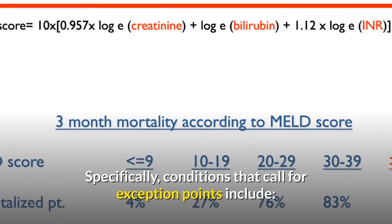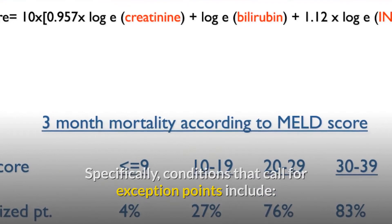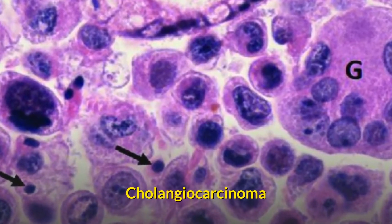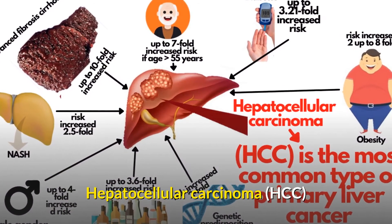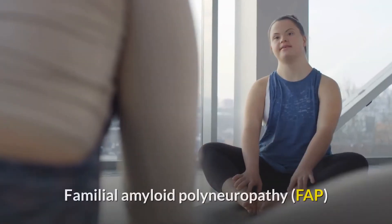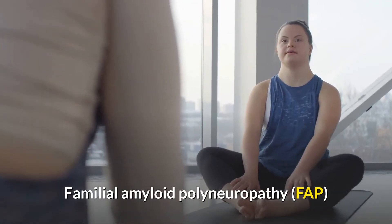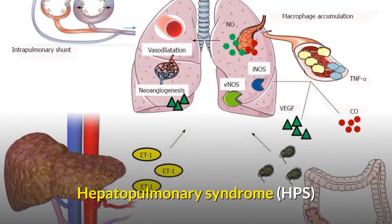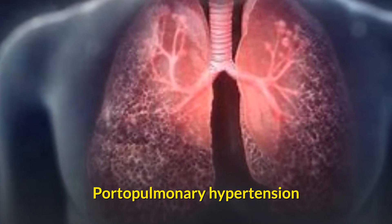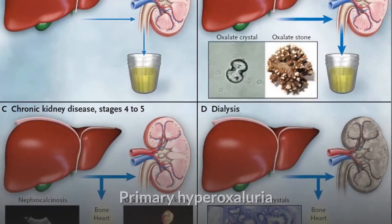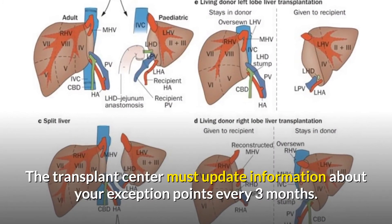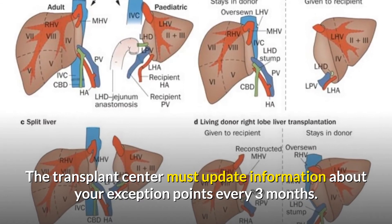Conditions that call for exception points include hepatic artery thrombosis (HAT), cholangiocarcinoma, hepatocellular carcinoma (HCC), cystic fibrosis, familial amyloid polyneuropathy (FAP), hepatopulmonary syndrome (HPS), portopulmonary hypertension, metabolic disease, and primary hyperoxaluria. The transplant center must update information about your exception points every three months.